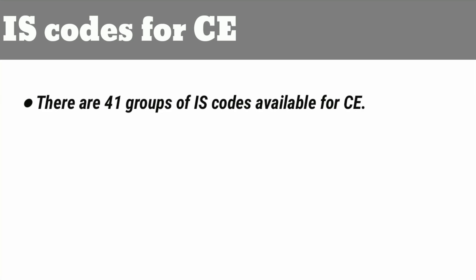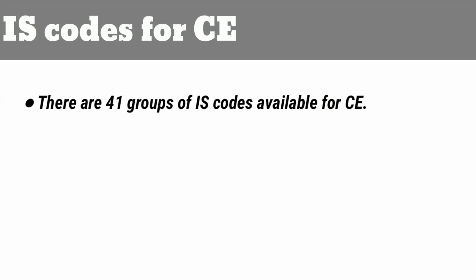Hi viewers, in this video let's see about Indian Standard Codes for Civil Engineering. There are 41 groups or categories of IS codes available for civil engineering.